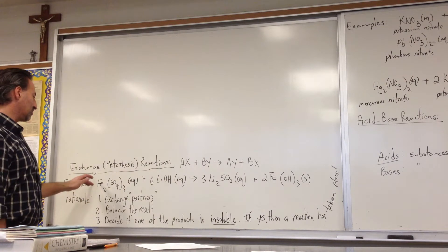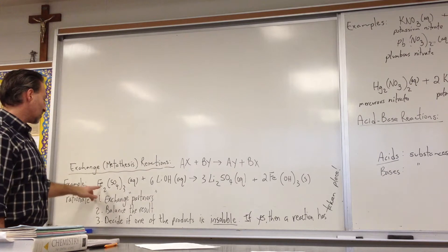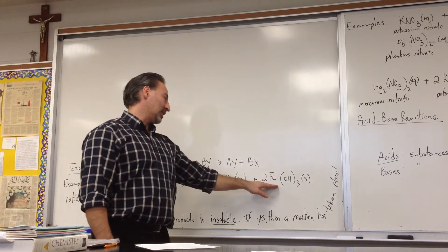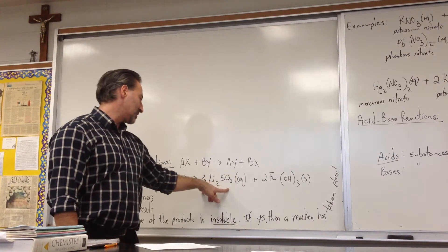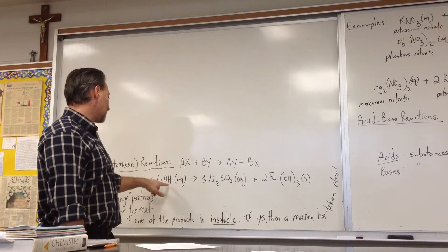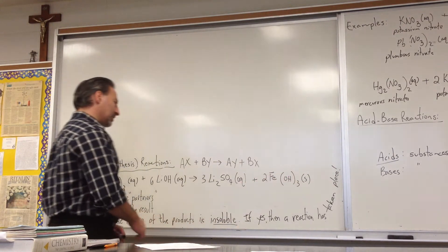We balance the equation by making sure that the same number of elements appear on both sides, so there are two iron atoms here, and there have to be two iron atoms on the right, three sulfates, three sulfates, six lithium atoms, six lithium atoms, six hydroxides, and six hydroxides. So the equation is balanced.